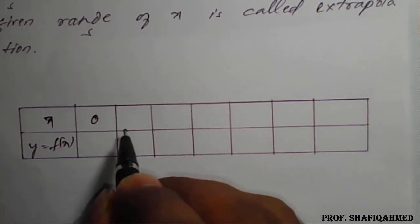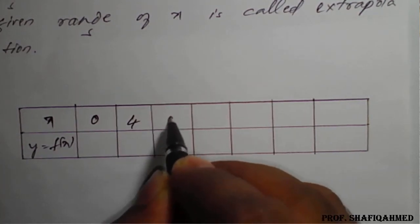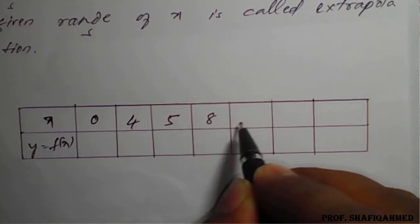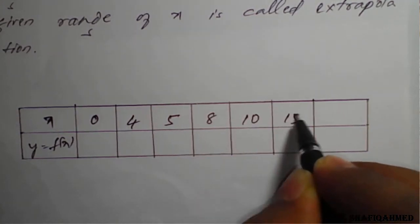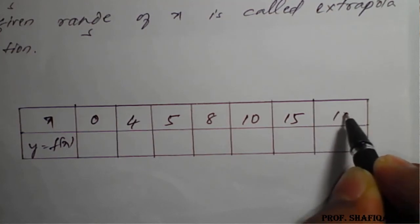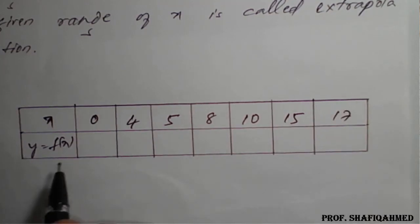x values are 0, 4, 5, 8, 10, 15 and somewhat 17.